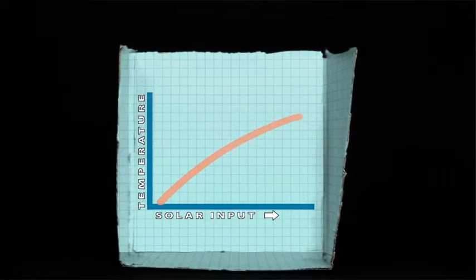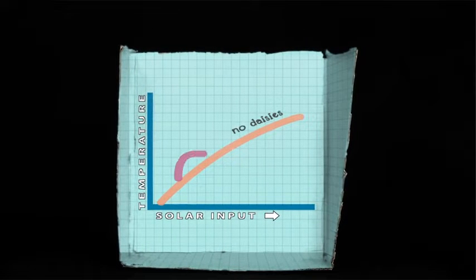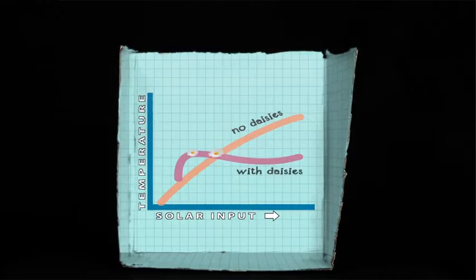And over time, within a narrowly defined temperature range, Daisy World stays resilient and makes it possible for daisies to exist at all.